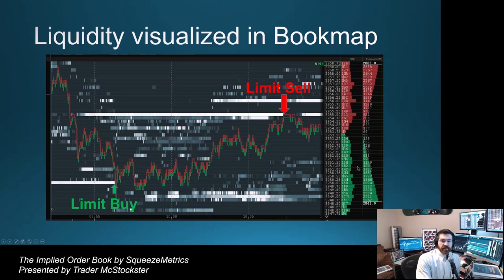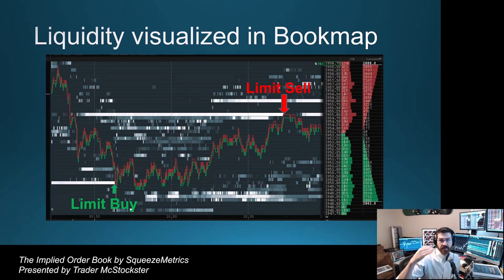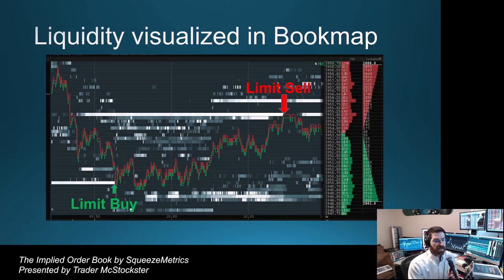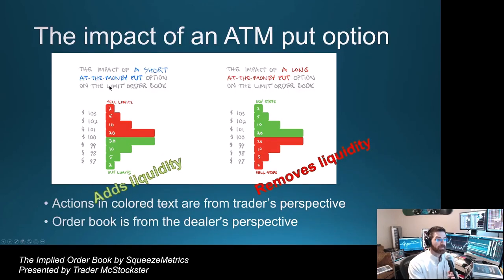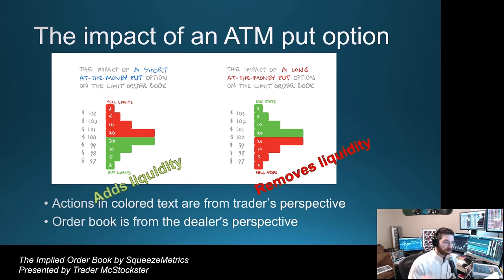In Bookmap, as price comes down, a limit buy is there; as price goes back up, the line above price is a limit sell. When you add liquidity, that's like one of these lines showing up on the chart. To eat that liquidity up and move price, you use market orders — that's removing liquidity. On the right is an order book from yesterday showing numbers of limit orders; if you put a market order down it eats up those first few lines and moves price until it stops at the next limit order. So the main point is you're either adding or subtracting liquidity from the market, and we're going to work on quantifying that.